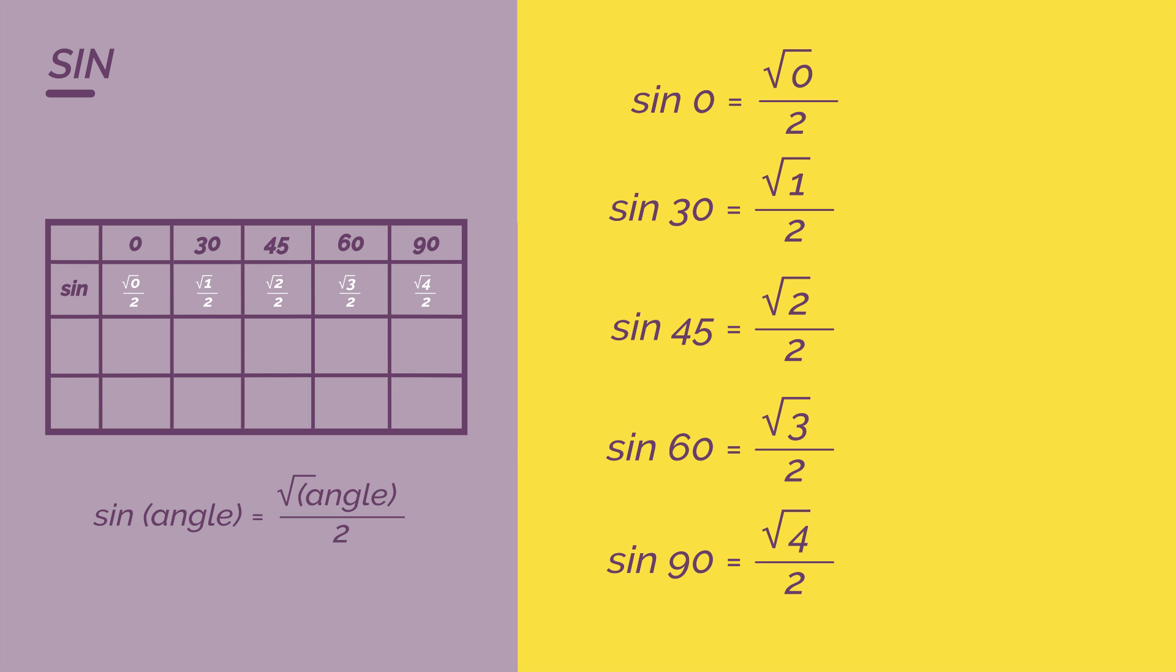And we can simplify some of these. So for zero degrees, that simplifies to zero. For 30 degrees, it simplifies to a half. And for 90 degrees, it simplifies to one. Not that hard.